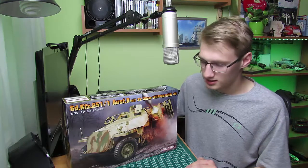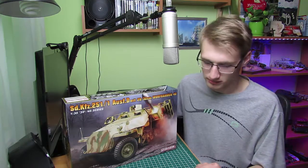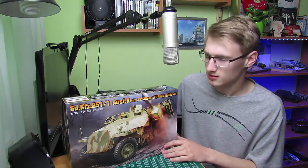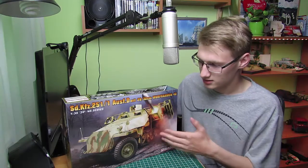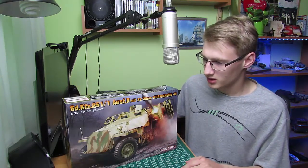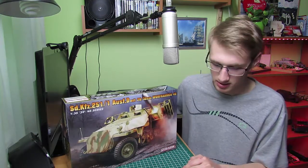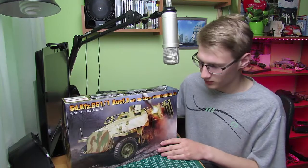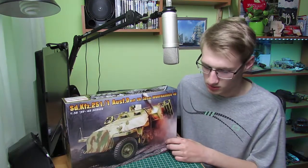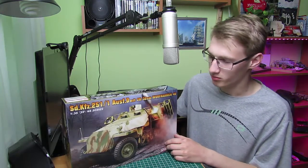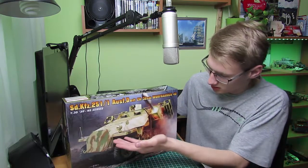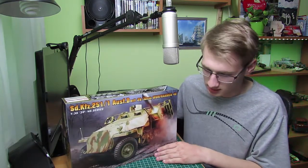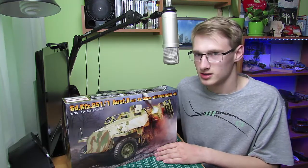Pierwszy prototyp powstał w 1935, zaś produkcja od 1939 do 1945. Silnik benzynowy, chłodzony cieczą, 6-cylindrowy, Maybach HL42 o mocy 100 KM. Zbiorniki paliwa mogły pomieścić 160 litrów, opancerzenie wynosiło od 6 do 12,5 mm. Jego wymiary to 5,8 m długości, szerokość 2,10 m i wysokość 1,75 m.